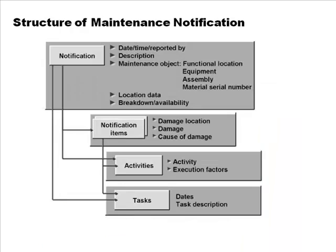The structure of a maintenance notification looks like this. The header has the usual things — date, time, description, etc. The header may also optionally indicate which technical object the notification has been created for: an equipment, a serial number, or a functional location. Things like where it happened, what the current status is — whether it's still working or has come to a standstill — are also in the header.